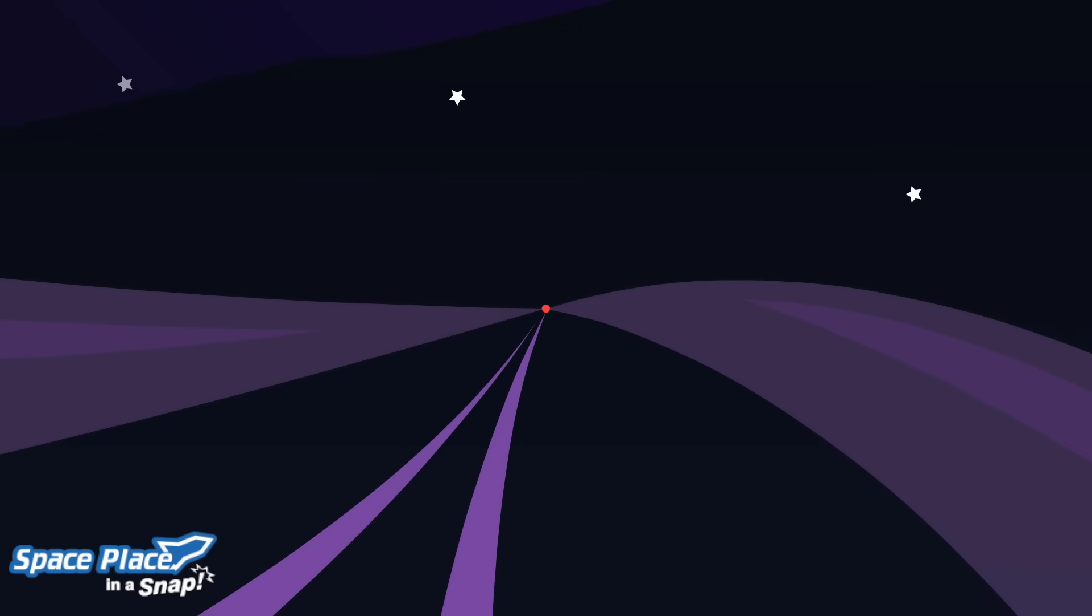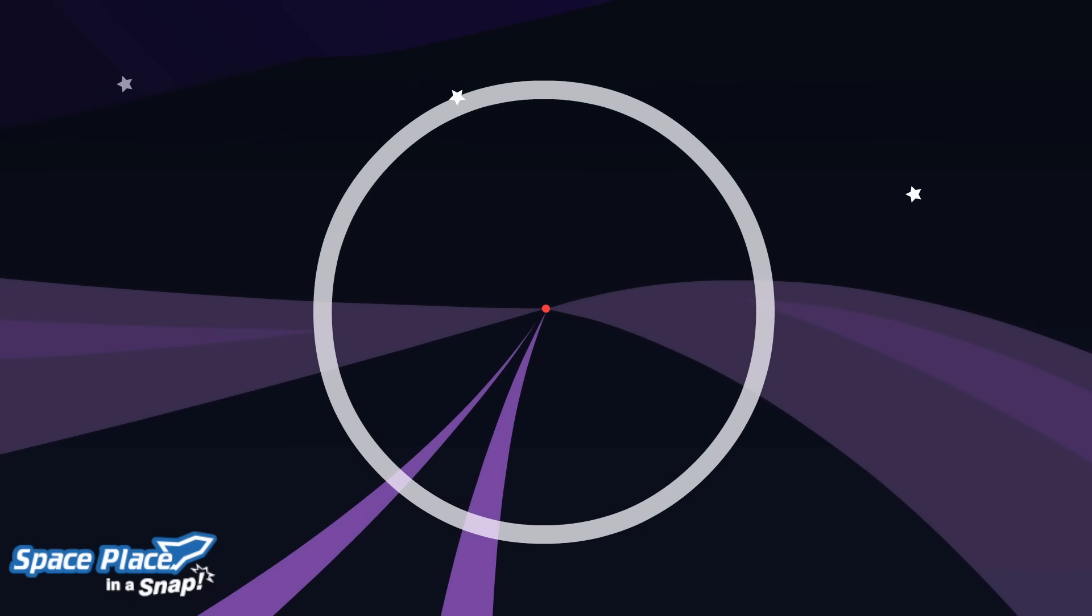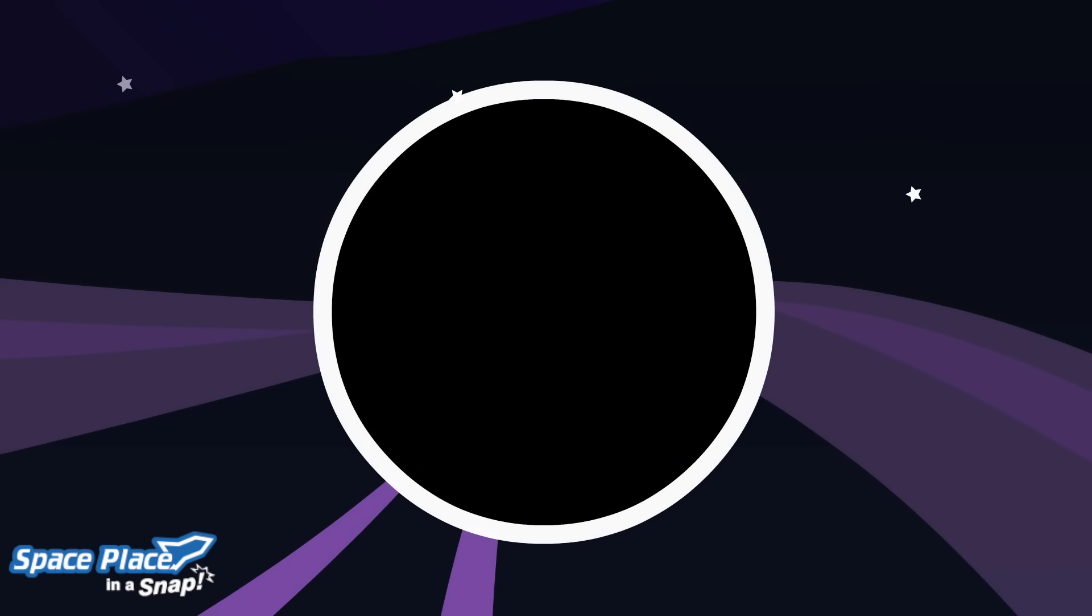Imagine a circle with a singularity in the middle. The gravity on the inside of the circle is so strong that nothing can escape. It sucks in everything, even light. That's why it's black.